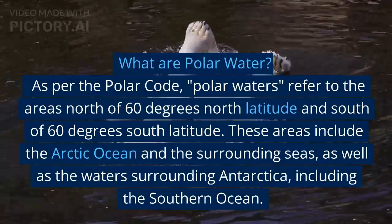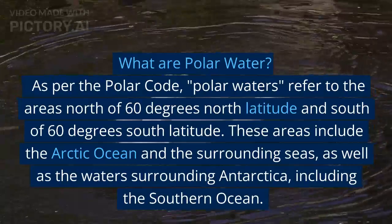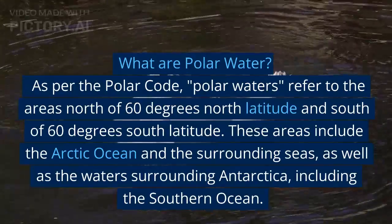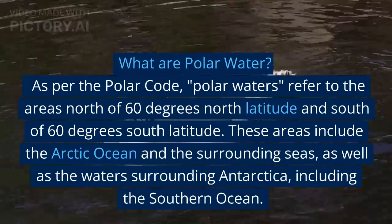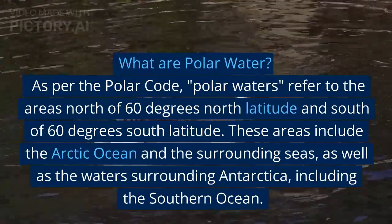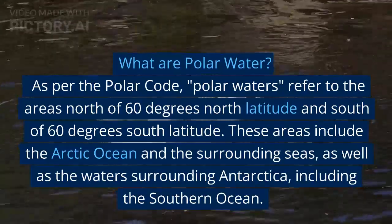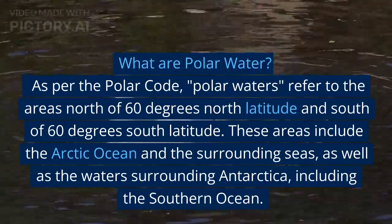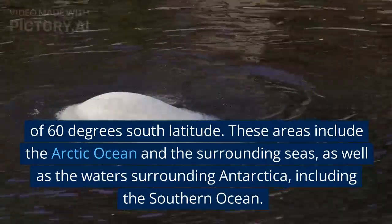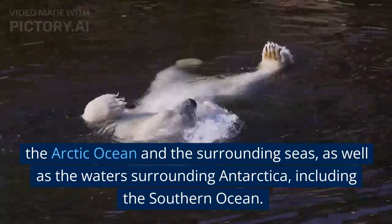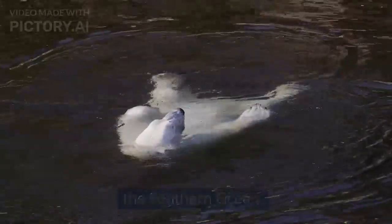Exam question: What are polar waters? As per the Polar Code, polar waters refer to the areas north of 60 degrees north latitude and south of 60 degrees south latitude. These areas include the Arctic Ocean and the surrounding seas, as well as the waters surrounding Antarctica, including the Southern Ocean.